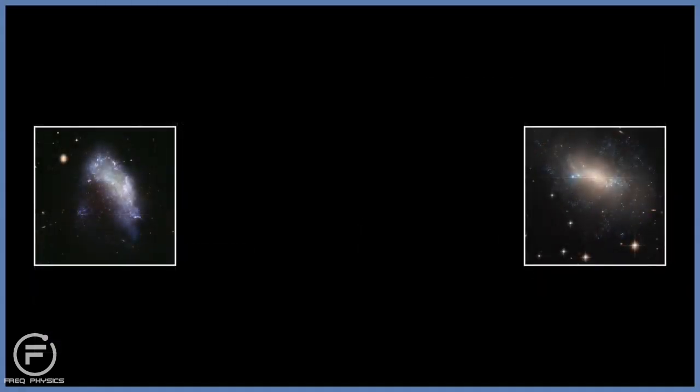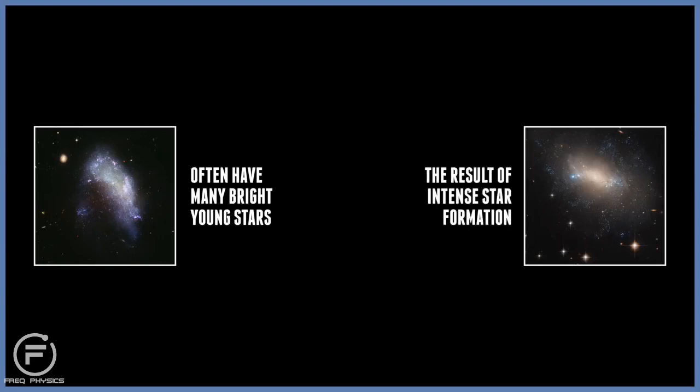Irregular galaxies are simply more chaotic. They can often be very bright, they can have young stars, and therefore they have recent bursts of star formation. But again, irregular galaxies can just be known as a galaxy that isn't quite spiral, but isn't quite elliptical.